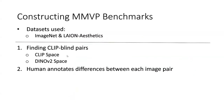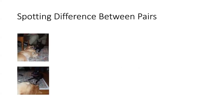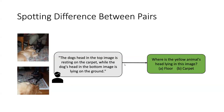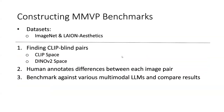After obtaining these CLIP-blind pair images, they give them to humans for descriptions and annotations, then formulate close-ended questions based on those annotations. For example, given a clip-blind pair of two dog images, a human might annotate that the dog's hat in the top image is resting on the carpet while in the bottom image it's lying on the floor. Based on this annotation, they construct a close-ended question. After obtaining question-image pairs, they use them to benchmark various multimodal LLMs and analyze results.